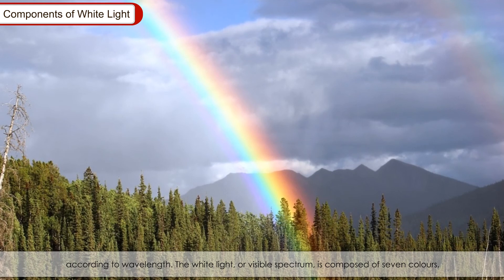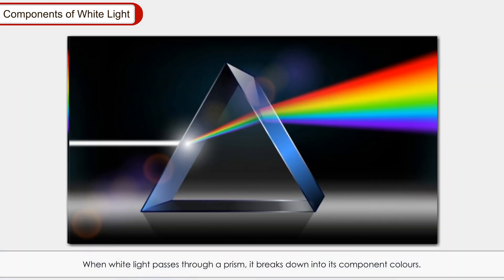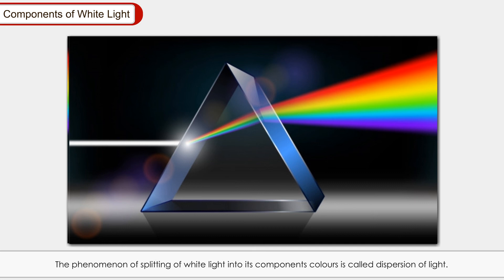The white light or visible spectrum is composed of seven colors, remembered as VIBGYOR: Violet, Indigo, Blue, Green, Yellow, Orange, and Red. When white light passes through a prism, it breaks down into its component colors. This is why rainbows show all the colors of the visible spectrum. This phenomenon of splitting of white light into its component colors is called dispersion of light.